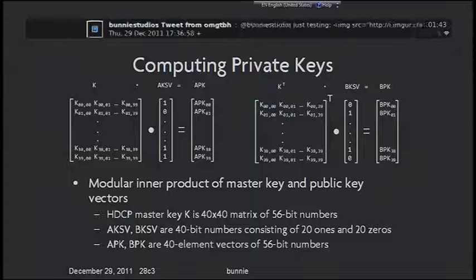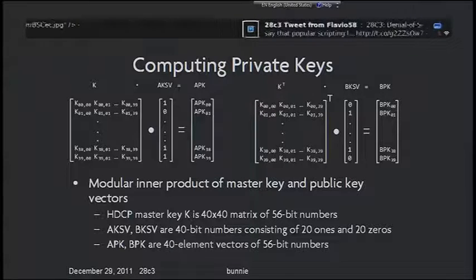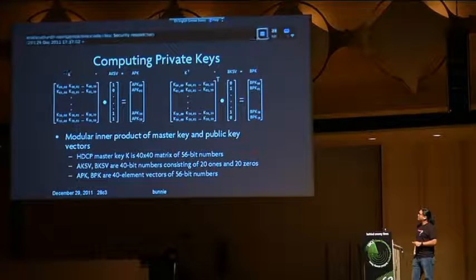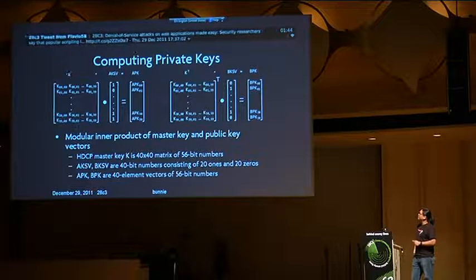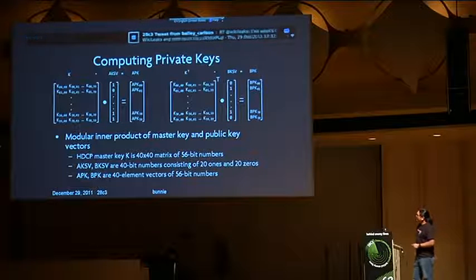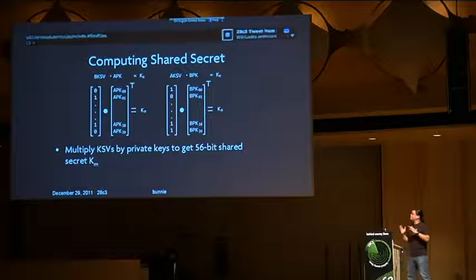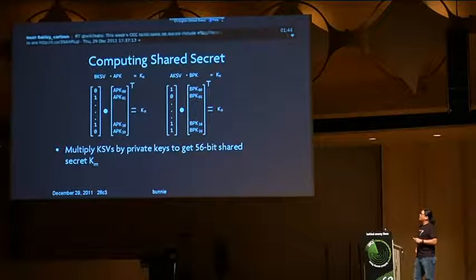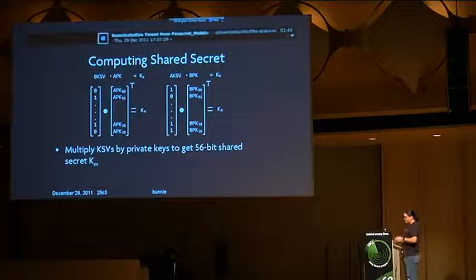I like to write out the math all together. When computing the private keys, you take K, the master key — the 40×40 matrix of 56-bit numbers — and do a dot product with the public key to get a vector of 40 56-bit numbers, which is the private key vector for the source. Then you take the transposition of the master key, multiply by the other public key, and get the other private key vector. This is done by the Linux host computer. Once you have these private key vectors, you multiply back by the key selection vectors to derive the shared secrets. I compute both to verify there's no corruption, and then after the shared secrets are computed, we're good to go on the ciphers.